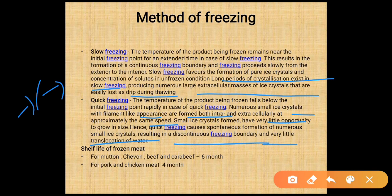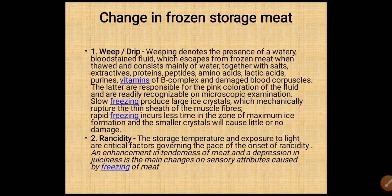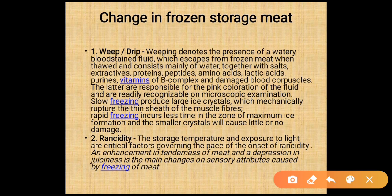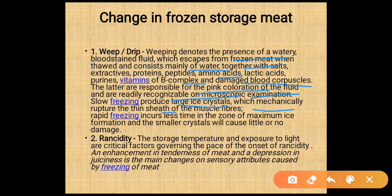Shelf life of frozen meat: mutton, chevon, beef, and cara beef have a shelf life of about 6 months; pork and chicken have a shelf life of about 4 months. Drip (whip) denotes the watery, blood-stained fluid escaping from frozen meat when thawed, consisting mainly of water together with salts, extractive proteins, peptides, amino acids, lactic acid, purines, and B-complex vitamins. Slow freezing produces large ice crystals that mechanically rupture the thin sheath of muscle fiber, while rapid freezing causes less damage.